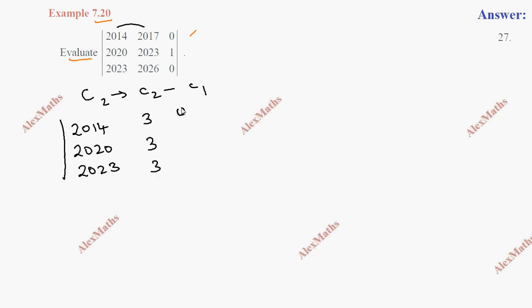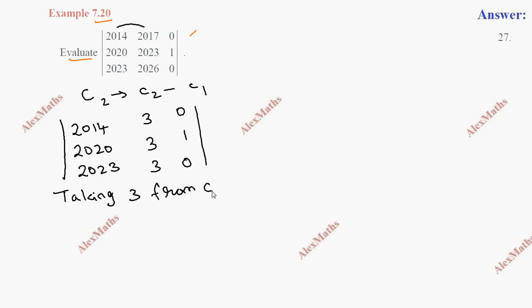The resulting elements are 0, 1, 0 — as they are. Now, 3, 3, 3 — so we need to take 3 from column 2. 3 is the value of the product.